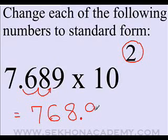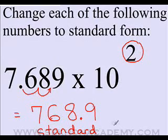Because we move the point twice to the right, we should not copy 10 to the second power anymore. So 768.9 is the standard form that we were looking for.